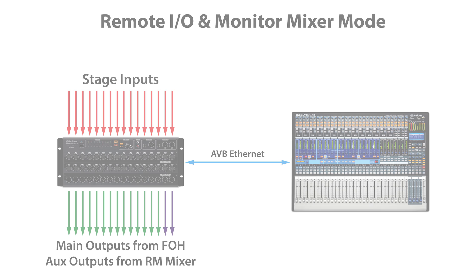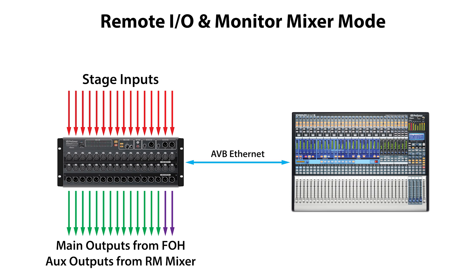The second mode is for remote IO and monitor mixing. When set to this mode, the RM mixer will provide remote inputs to the AI console mixer at front of house, and the main mix from the front of house mixer will be sent to the RM mixer's main outputs. The mix outputs on the RM mixer provide dedicated AUX outputs from the RM mixer, allowing it to be used as a separate monitor mixer.